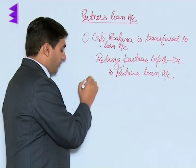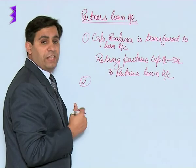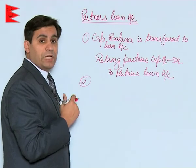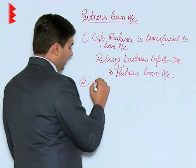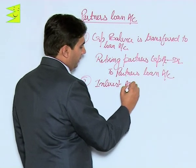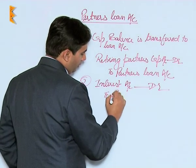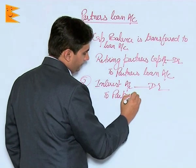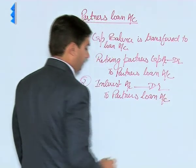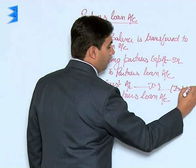Now students, since it has now become a loan, after a certain period of time, at a certain rate of interest, interest will become due. So the entry for interest would be: interest account debited to partner's loan account. That is, interest on loan.